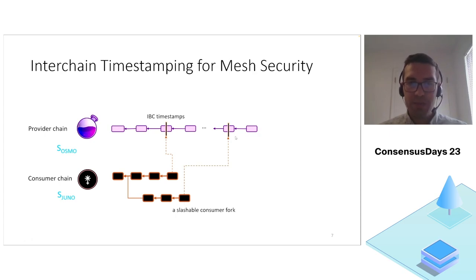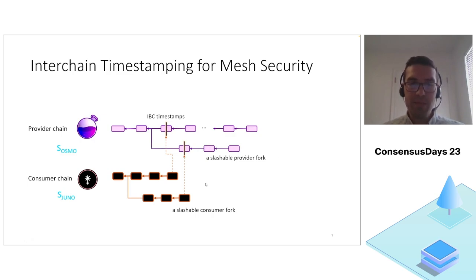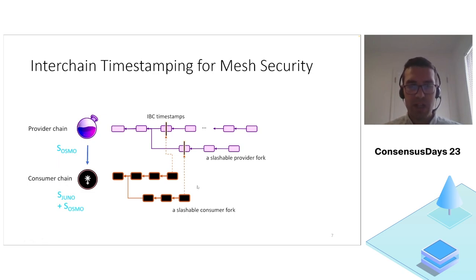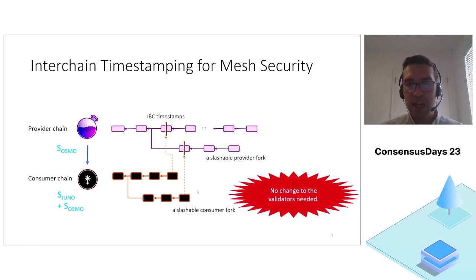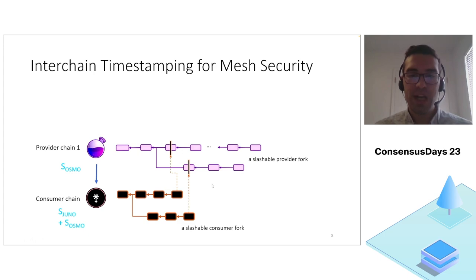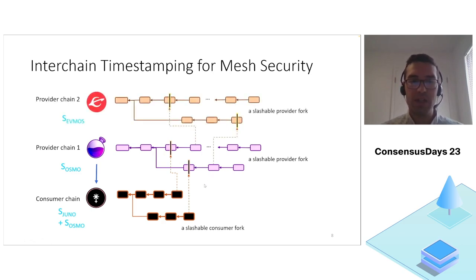To understand why: consider a safety violation on the consumer chain. For this to be an actual safety violation that clients finalize, the conflicting fork must be posted on the provider chain. However, if it is posted on the same provider chain as the earlier timestamp, clients can resolve the safety violation using the ordering of these timestamps. The conflicting fork must instead be posted on a conflicting chain on the provider side, meaning there are safety violations on both the provider and consumer chain simultaneously. As a result, validators become slashable on both sides and the consumer chain's economic security inherits the provider chain's economic security. This protocol does not require any change to validator code since IBC timestamps are already implemented in the Cosmos ecosystem — we just need to change the finality rule of the clients. Furthermore, this idea can be used to derive security from multiple provider chains.